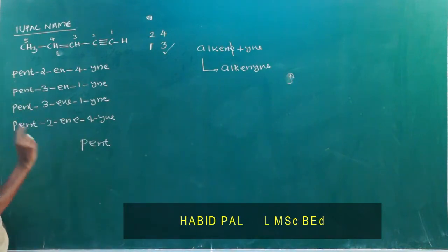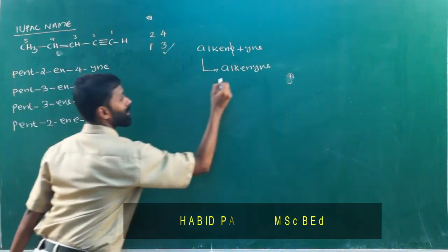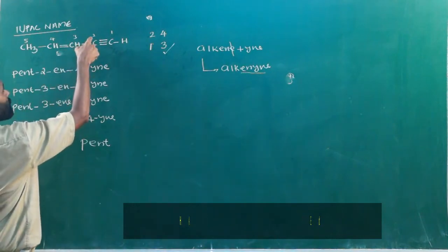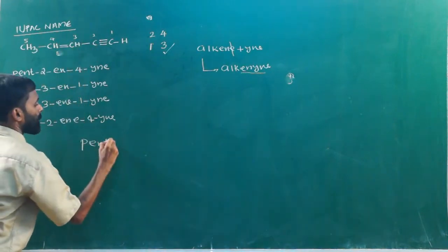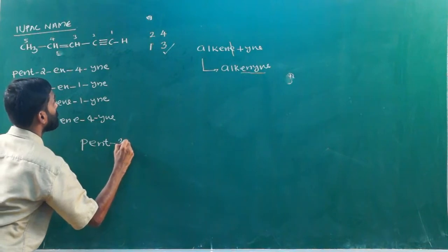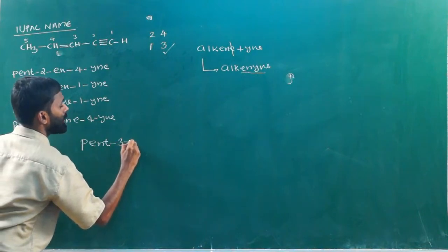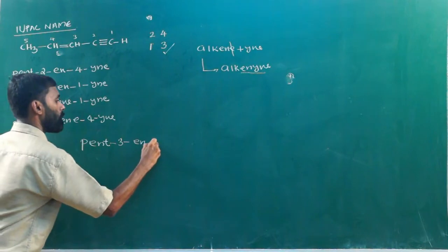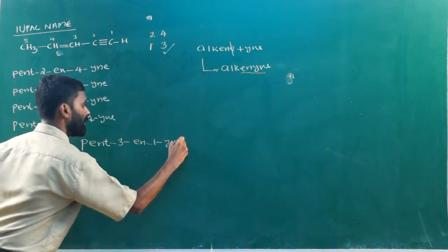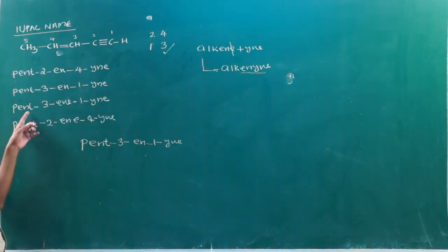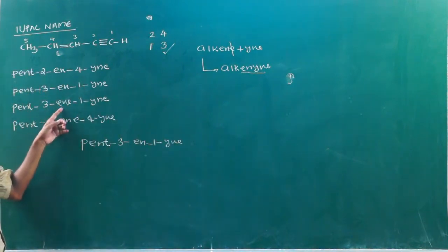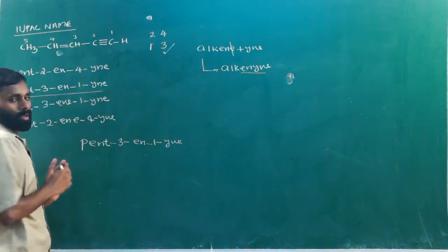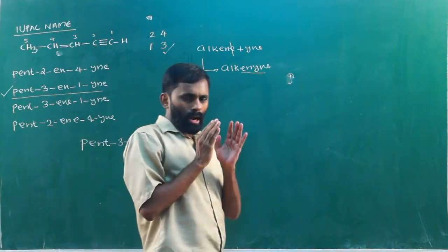Pent. Then the first suffix is for the double bond — we use 'en' — and it is at position three. So we have pent-3-en. Then the triple bond is at position one, represented as 'yne' — so pent-3-en-1-yne. This is the answer: pent-3-en-1-yne.